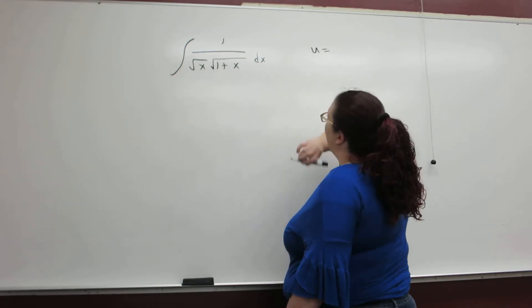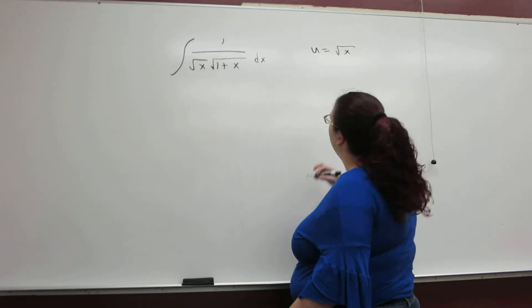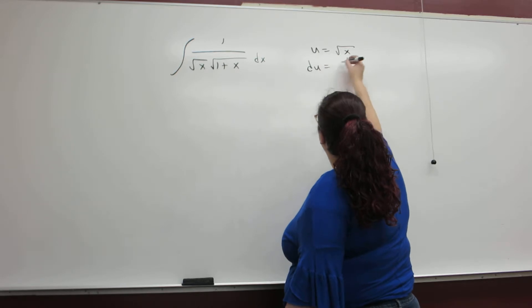However, if we do a quick u substitution, letting u equal the square root of x, du is 1 over twice square root of x dx.